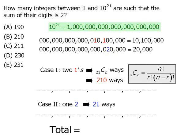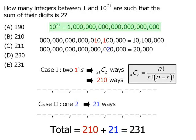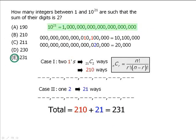So the total number of 21 digit numbers that satisfy either cases 1 or 2 will be equal to 210 plus 21, which equals 231. So our answer is E.